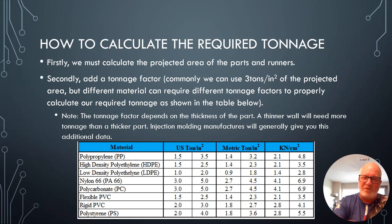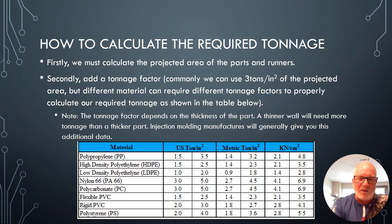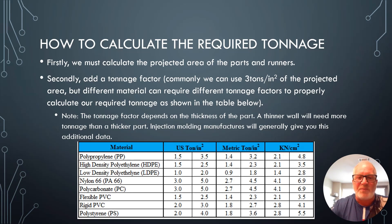The table covers materials like polypropylene, high-density polyethylene, low-density polyethylene, nylon 6, polycarbonates, PVC rigid and flexible, and polystyrene. Note that the tonnage factor also depends on part thickness — a thinner wall will need more tonnage than a thicker part.